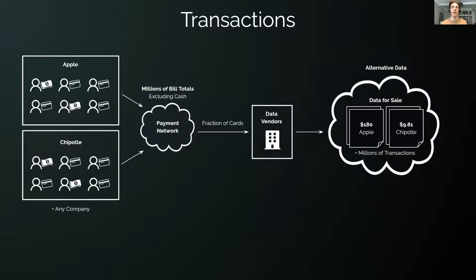And this same setup holds for lots of companies, not just Apple. So for any company that lets consumers pay with credit or debit cards, some fraction of those bill totals may end up in commercially available data sets. This type of data on the right is alternative data. The transactions data that is for sale, this is alternative to direct disclosures from companies. Apple is not disclosing this information. The transactions are the exhaust data of the payment system. And it turns out that you can buy this.